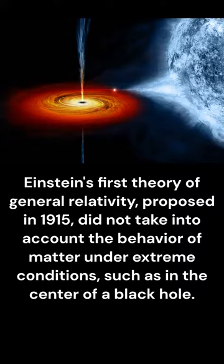Einstein's first theory of general relativity, proposed in 1915, did not take into account the behavior of matter under extreme conditions, such as in the center of a black hole.